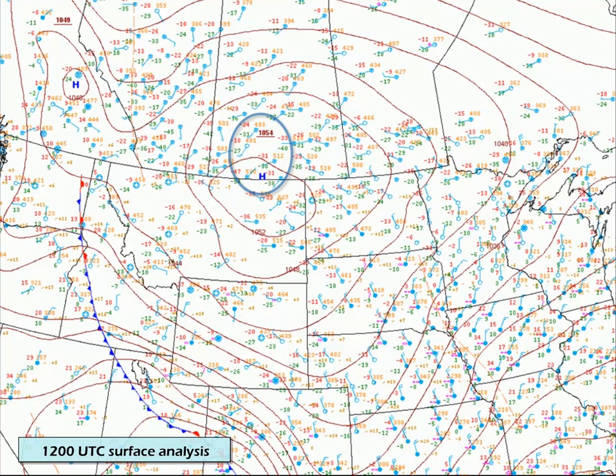While not a record high pressure, altimeter settings in the northern high plains were nearly 31.00, which is the highest setting capable in most altimeters.